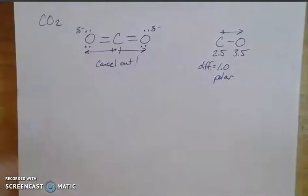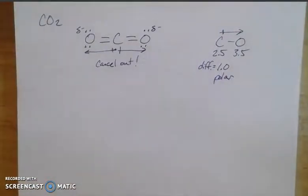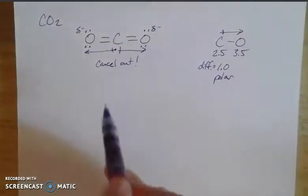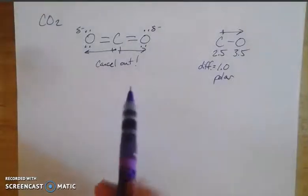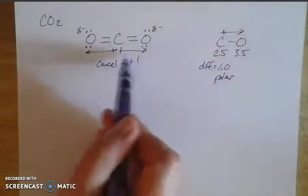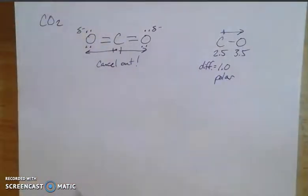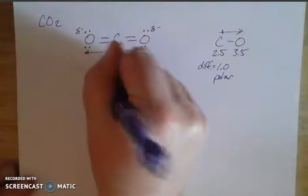As you move forward in chemistry, you'll find that dipoles are actually vector quantities with direction and magnitude that can be added together. That goes beyond the scope of this video, but the key point is: if dipoles point in opposite directions or in different directions that cancel out, the molecule is nonpolar.